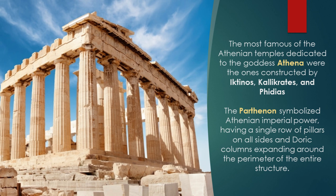The most famous of the Athenian temples dedicated to the goddess Athena were the ones constructed by Ectenos, Calicrates, and Phidias, known as the Parthenon. The Parthenon symbolizes Athenian imperial power, having a single row of pillars on all sides and Doric columns expanding around the perimeter of the entire structure. The Parthenon is surrounded by these columns or pillars of walls.